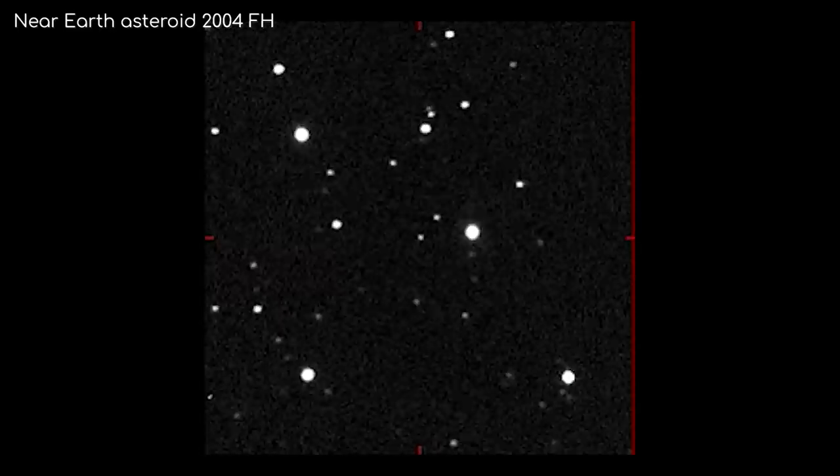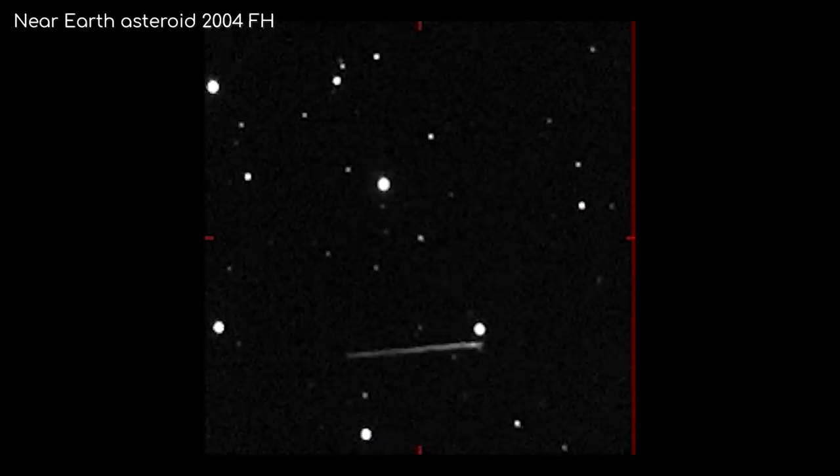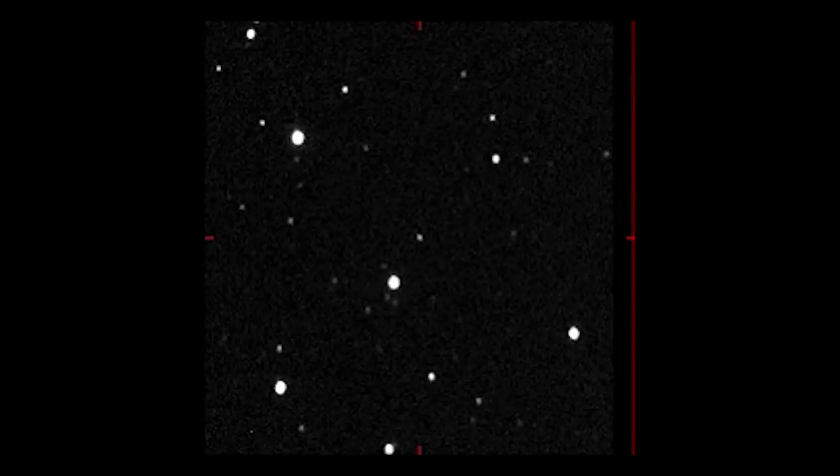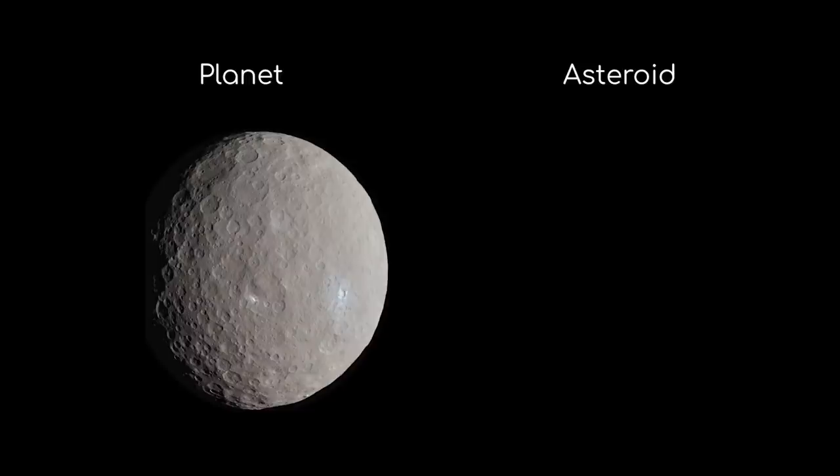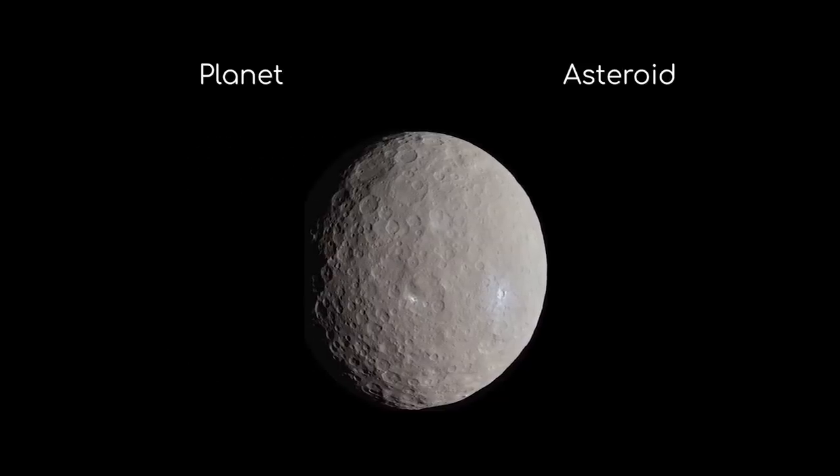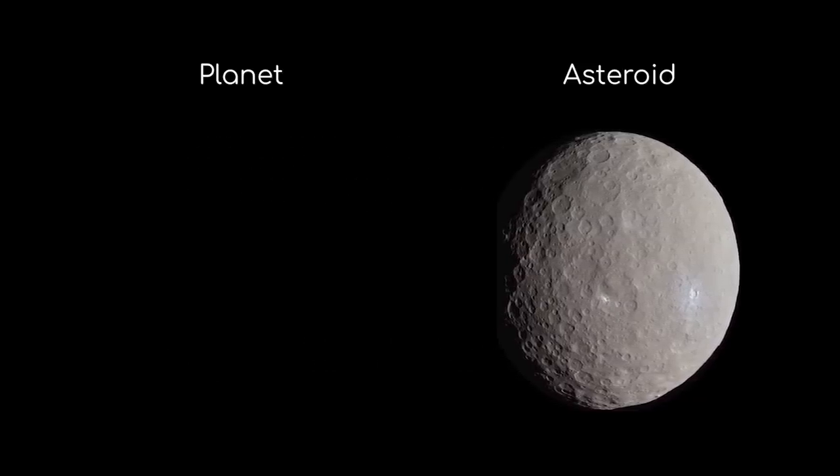Asteroids were described as objects that couldn't be distinguished from stars, bar the fact that they moved across the sky. So even 100 or so years ago, we were ruthless and demoted planets.